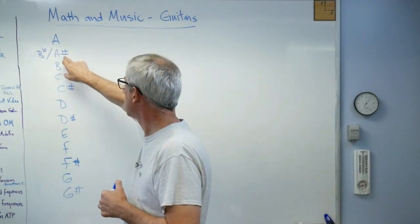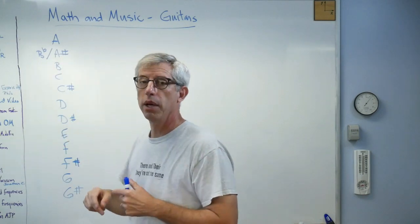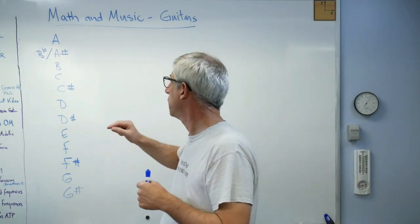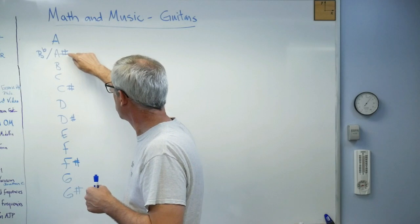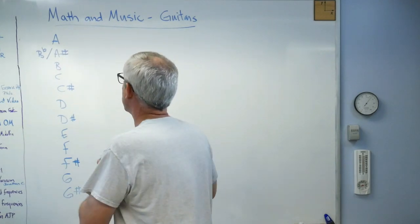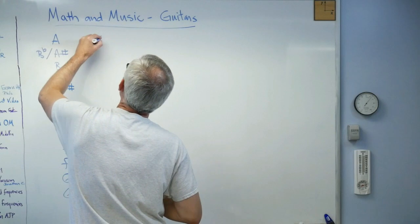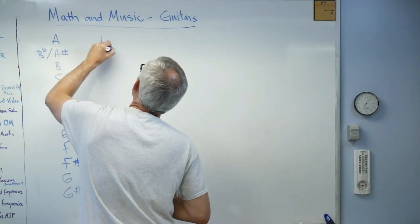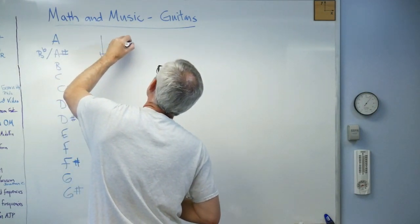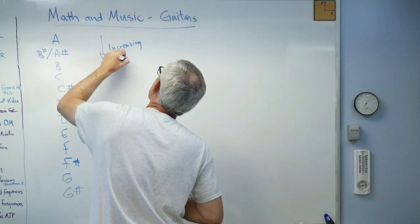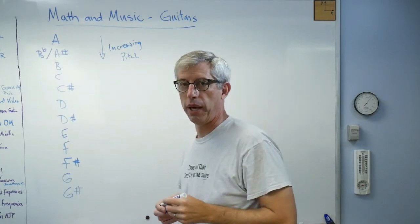Also, there's this little checkerboard thing that means sharp. Sharp means we raise the pitch. So A sharp has a higher pitch than A. I've got it written down right here. Higher pitches are going down. So I have what I call increasing pitch.